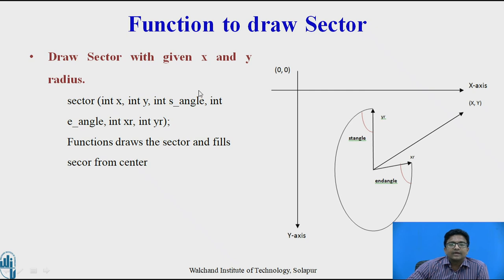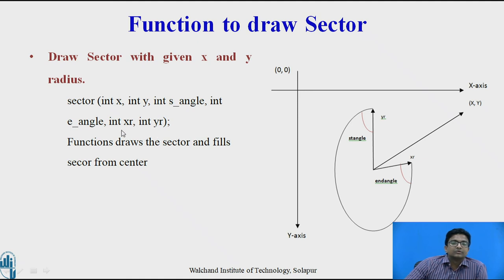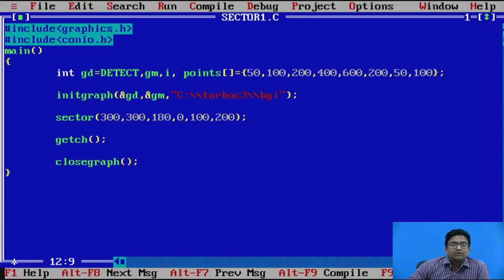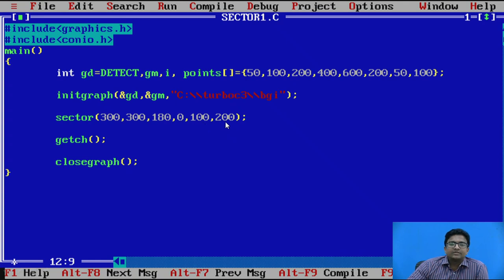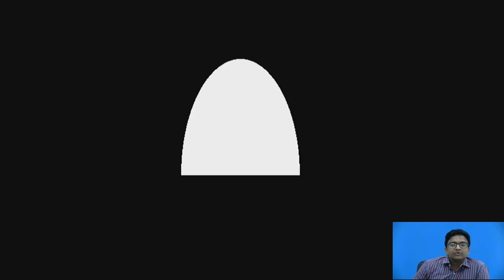The function to draw a sector is similar — we pass int x, int y, int starting angle, int end angle, and additionally int x radius and int y radius. This draws a sector and fills it from the center. In the example, the sector is drawn at point 300, 300 with starting angle 180, end angle 0, x radius 100, and y radius 200. This draws a filled sector.